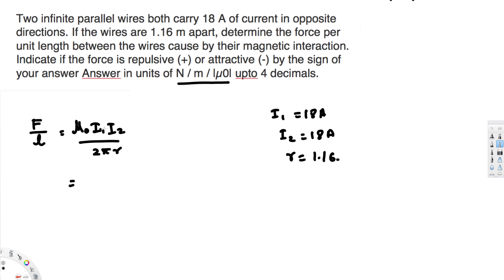I1 and I2 are the same, so we can put 18 squared. I1 times I2, that's 18 squared divided by 2 pi times R, which is 1.16. It's already in meters, so we don't need to convert.